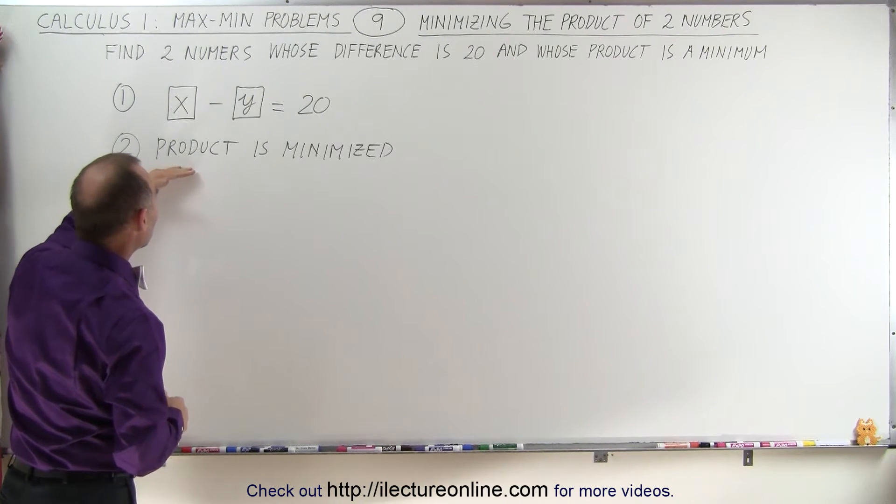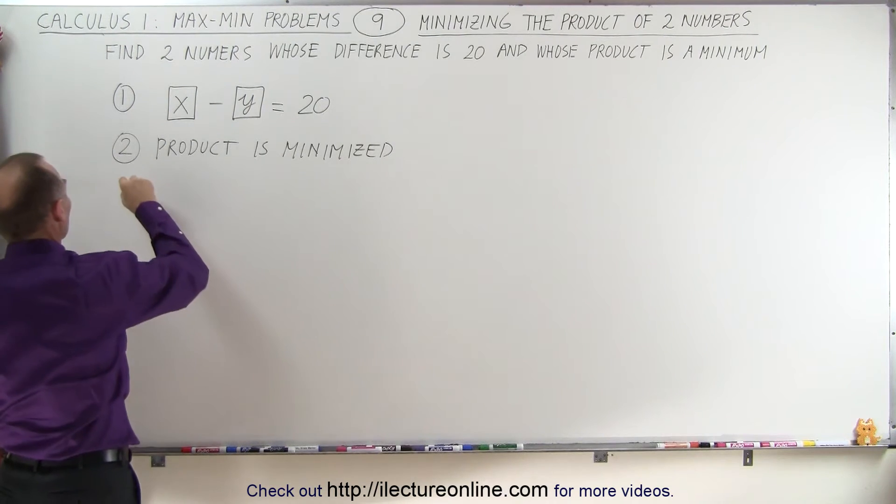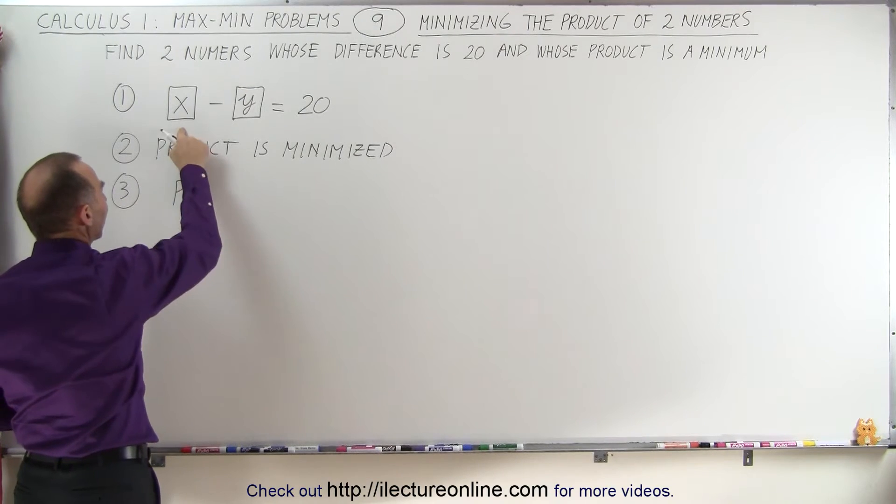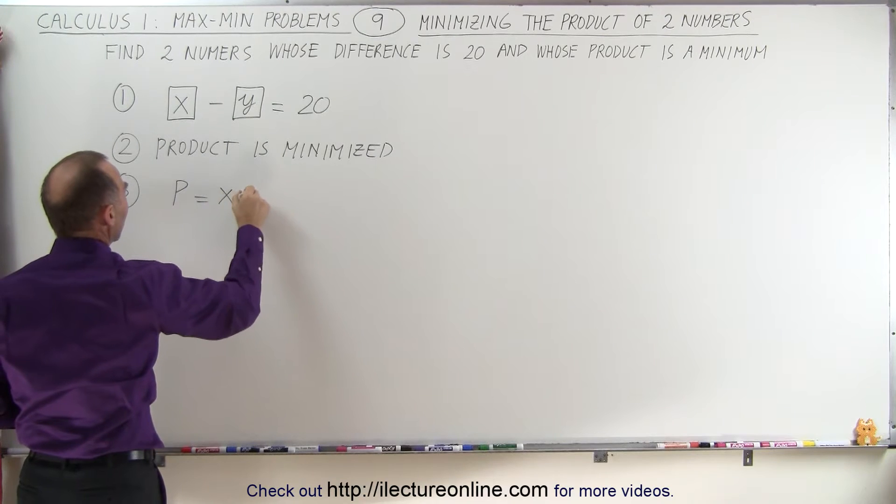Next, we're going to need an equation for the product in terms of the unknown variables. So for step three, we realize that the product is simply equal to X times Y, since those are the two unknowns.